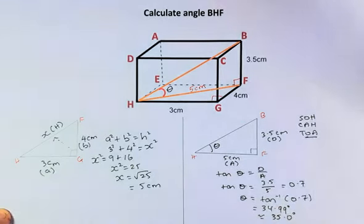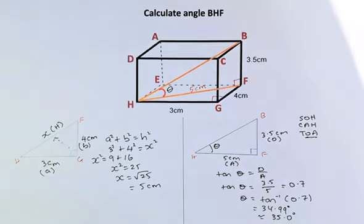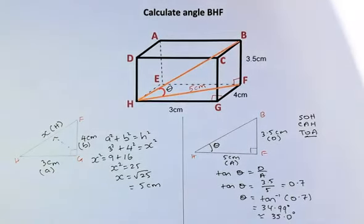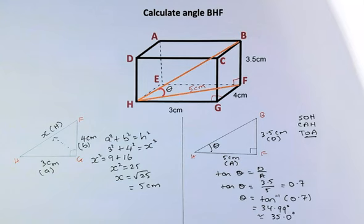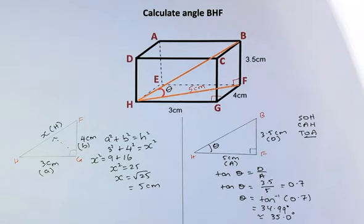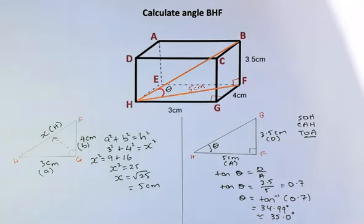This is how you calculate the length and angles of a triangle from a cuboid. And this is part of the NCEA geometric reasoning merit and excellence question. See you soon. I hope you enjoy this video. Cheers everyone and have a good day.